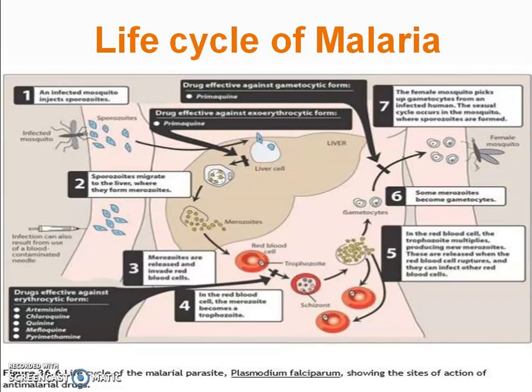When the liver cells rupture, the merozoites are released into the bloodstream, where they rapidly invade red blood cells (RBCs). These blood-stage parasites replicate asexually, rapidly attaining a high parasite burden and destroying each RBC. After destroying RBCs, the merozoites are converted into trophozoites. The trigger is unknown, but a small percentage of these merozoites differentiate into male and female gametocytes.